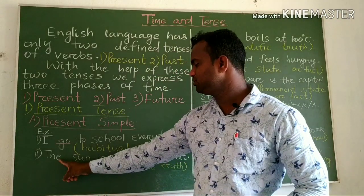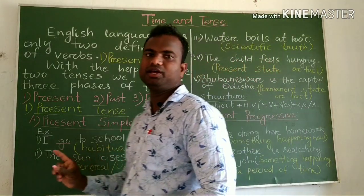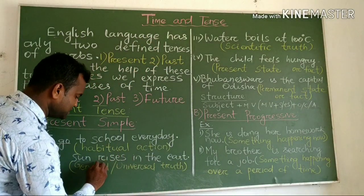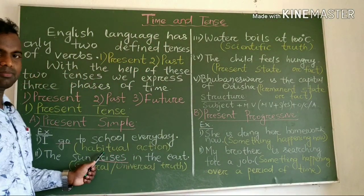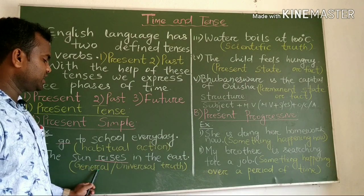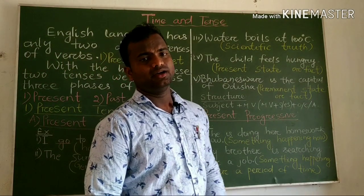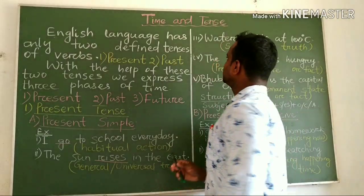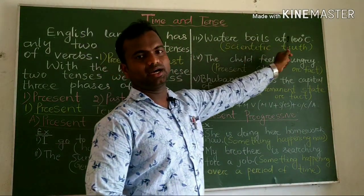Next example: the sun rises in the east. The sun rises in the east — this expresses a present general or universal truth. Another example: water boils at 100 degrees. These are examples of present simple used for universal truths.